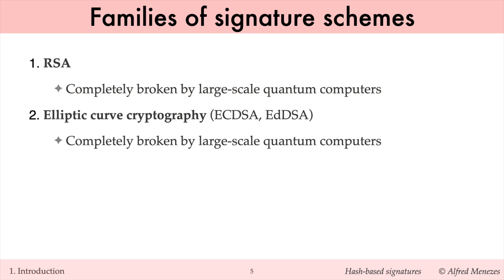The families of signature schemes most commonly used today are RSA and elliptic curve-based schemes, such as ECDSA and EdDSA. Both families share the unfortunate property that they can be completely broken by large-scale quantum computers.